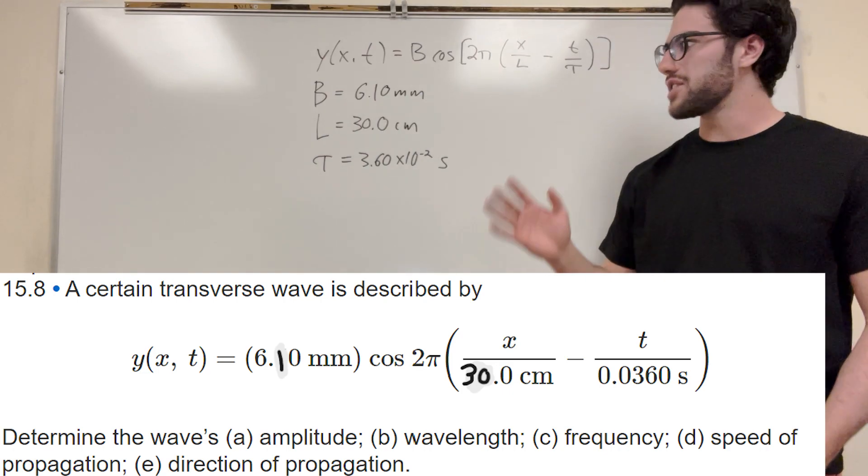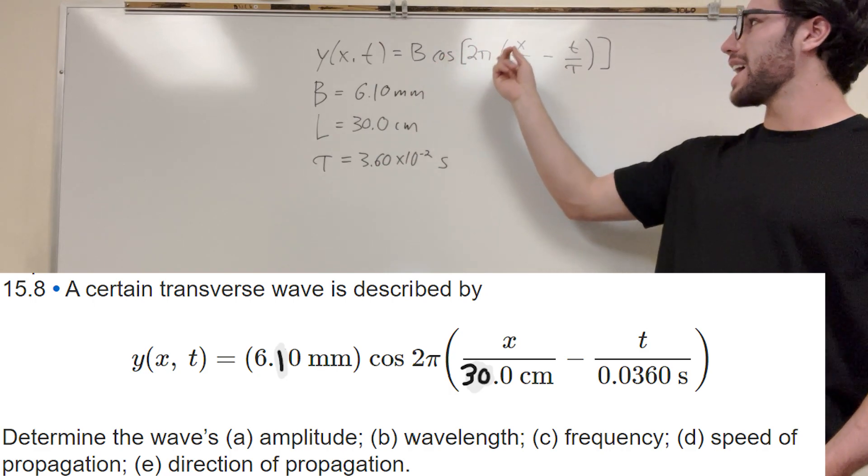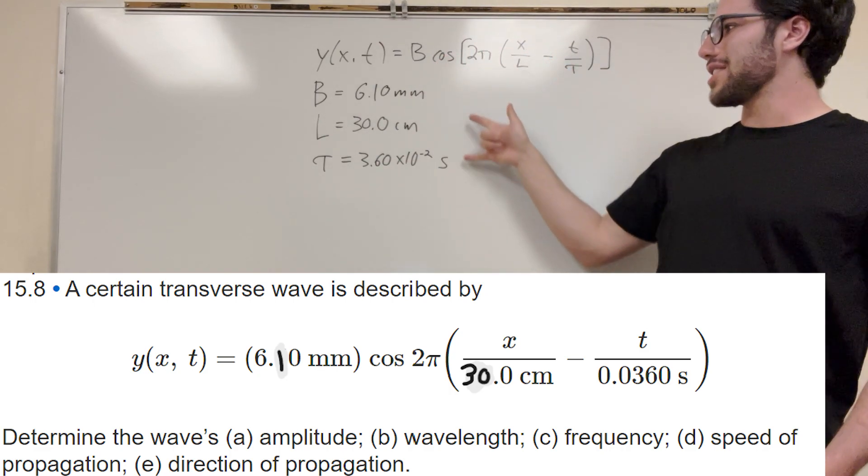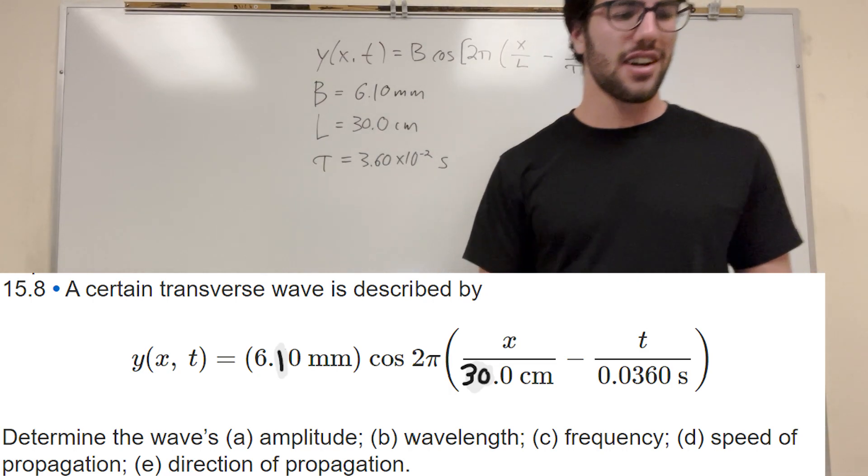What's up Cal gang? Alright, so we got this transverse wave problem. It gives you this function y of t equals b cosine 2π this, and it gives you these three values. We have a whole bunch of problems to solve here, so let's go ahead and get started.